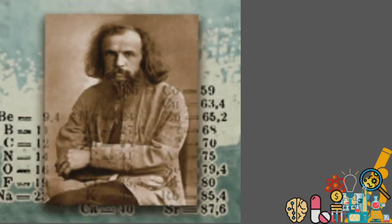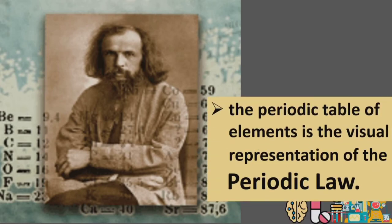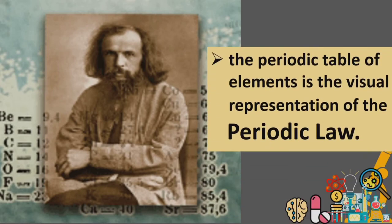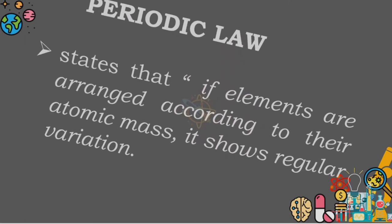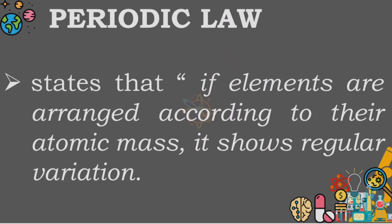The periodic table of elements is the visual representation of the periodic law. Periodic law states that if elements are arranged according to their atomic mass, it shows regular variation.